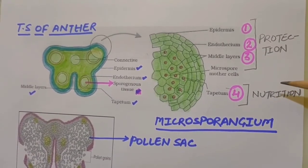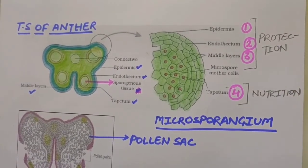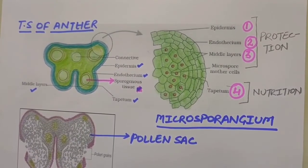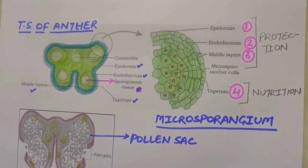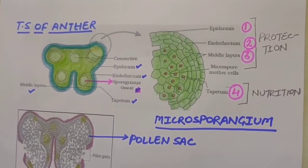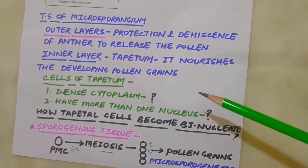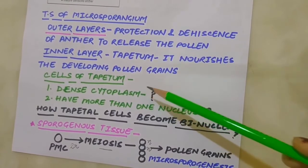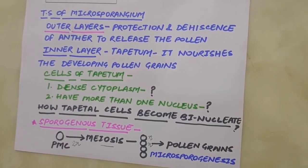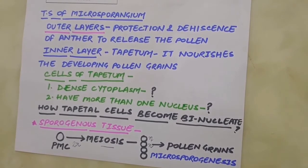The cells of tapetum possess dense cytoplasm and generally have more than one nucleus. Can you think of how tapetum cells become binucleate? If the condition is binucleate, it means there is karyokinesis but cytokinesis does not occur. Tapetum cells undergo endomitosis, in which the nucleus divides within the nuclear membrane. Tapetum cells also have dense cytoplasm as they are responsible for producing sporopollenin, a protein that forms the pollen wall. Due to high concentration of cell organelles carrying out protein synthesis, the cytoplasm of tapetum cells appears dense.